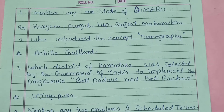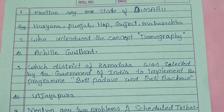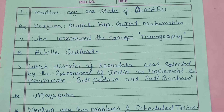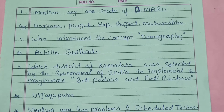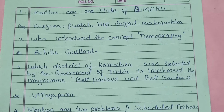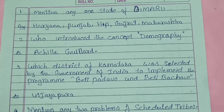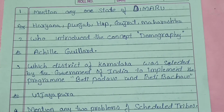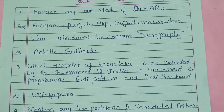Hi students, today in our class we are going to refer to the model paper of sociology, covering questions carrying one mark and two marks. Let's start our class. The first question is: mention any one state of DIMAR. The states that come in DIMAR are Haryana, Punjab, and Himachal Pradesh.